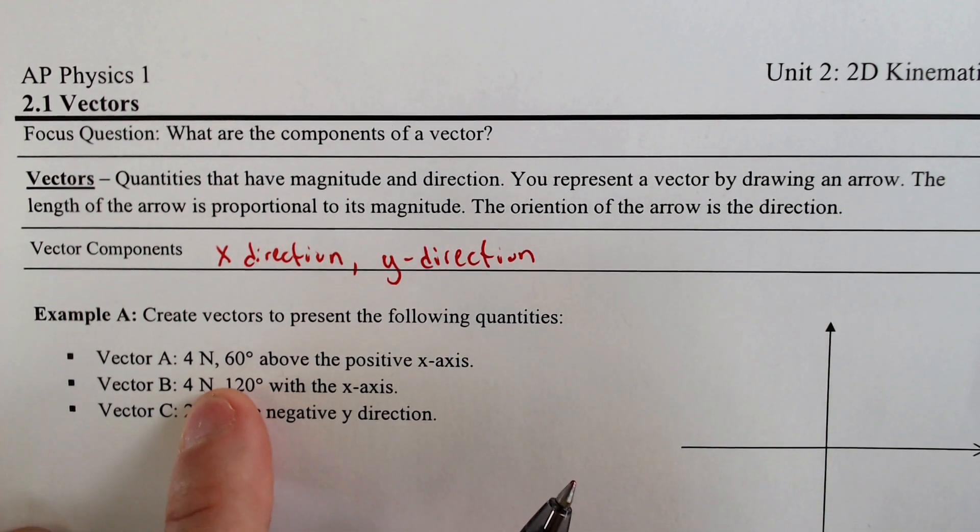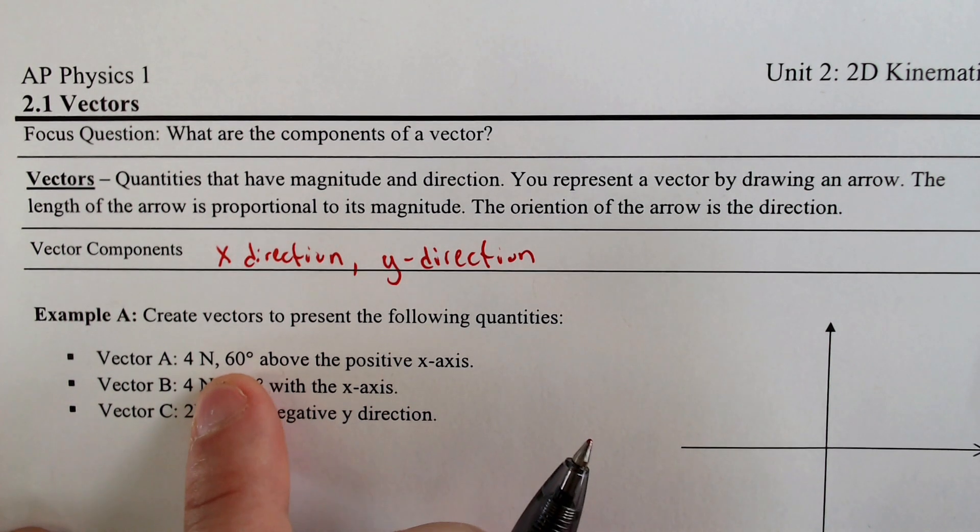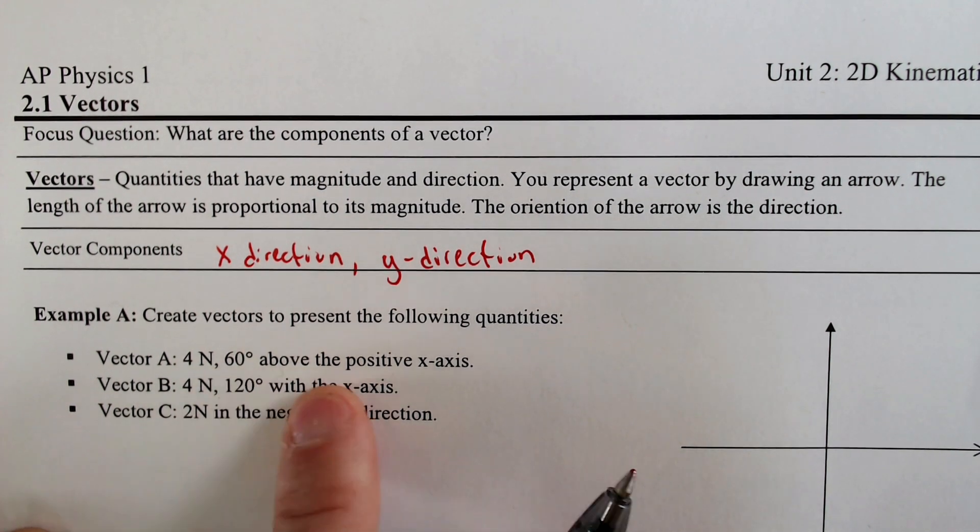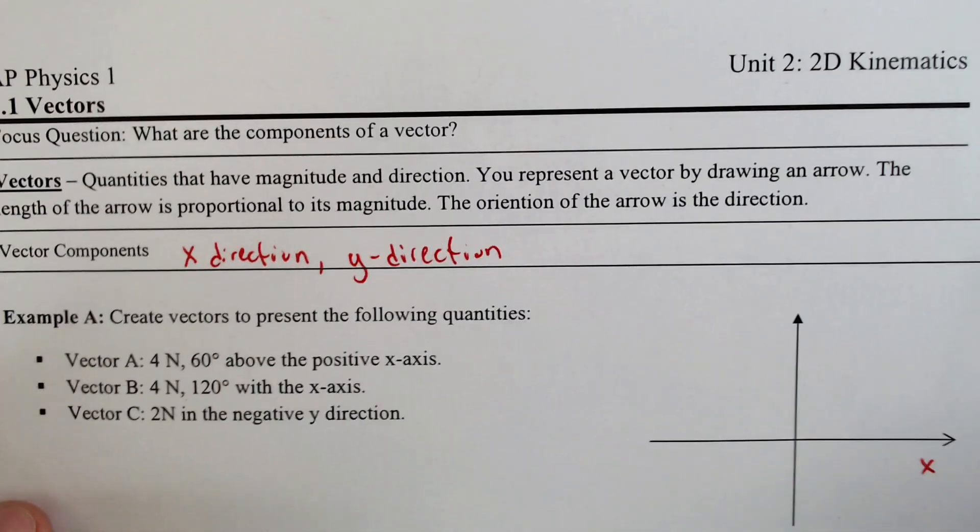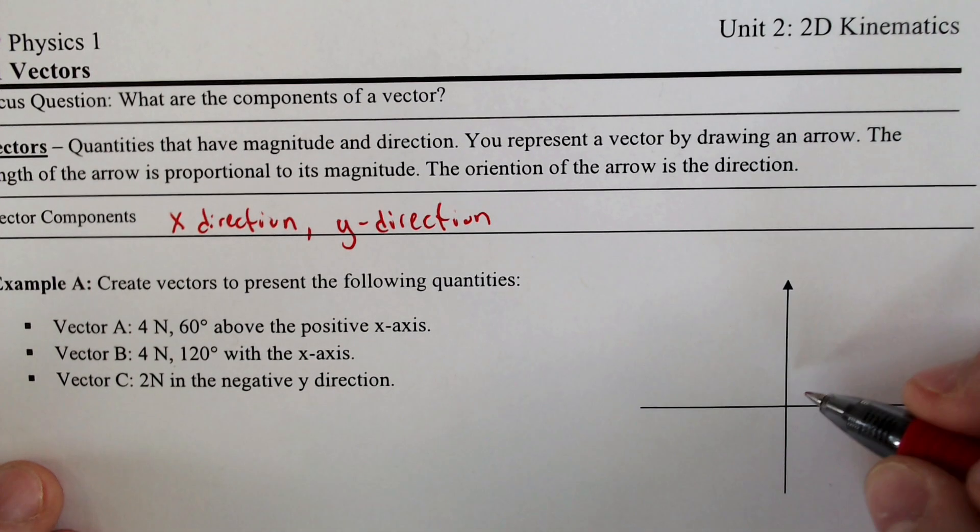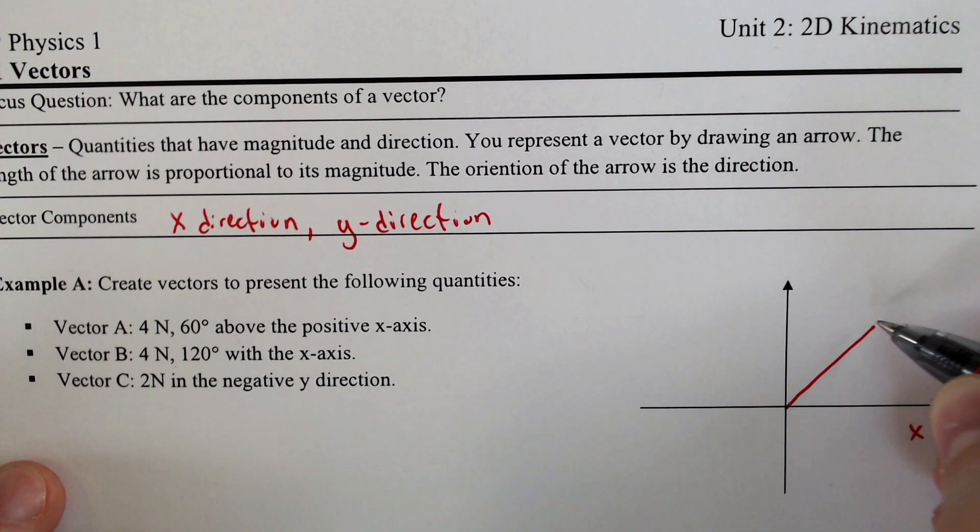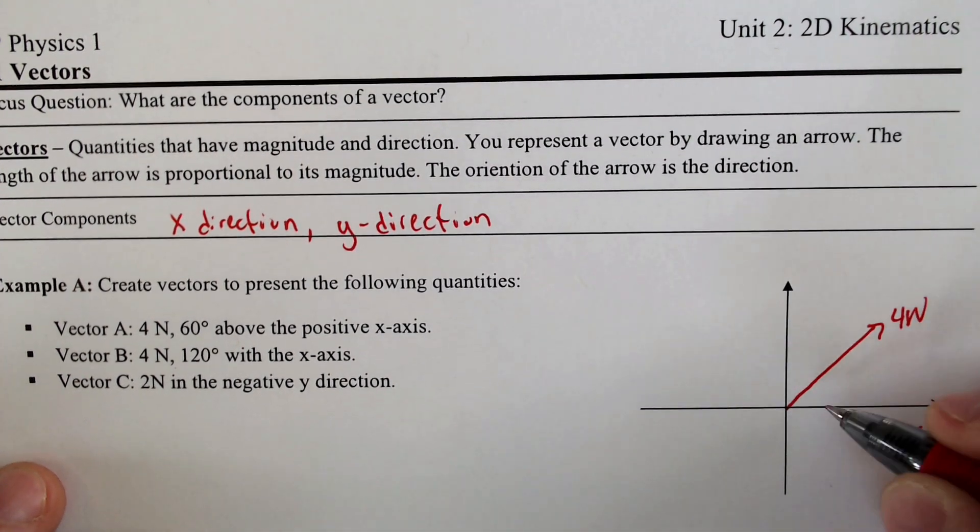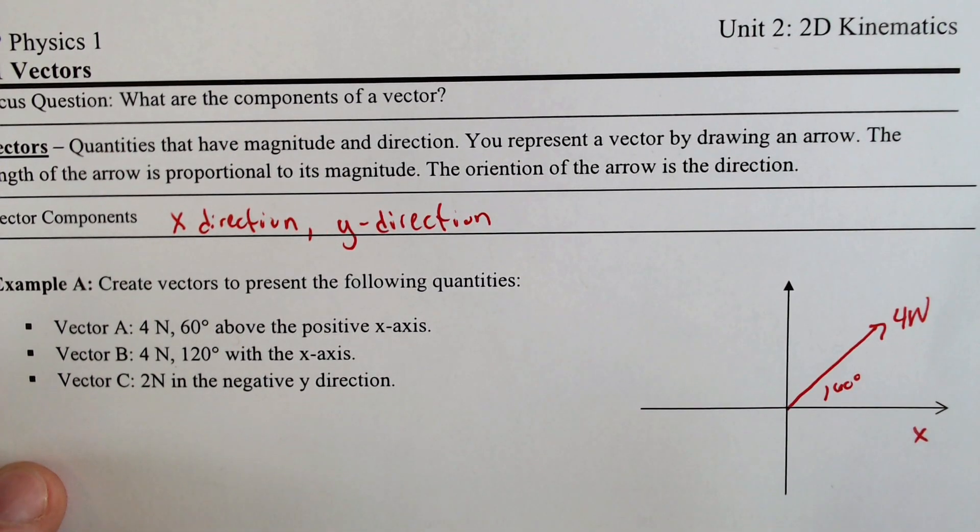Vector A is 4 newtons north. That is going to be the length of the vector and 60 degrees above the x-axis in the positive direction. So here's the x-axis. We need to go in the positive direction by about 60 degrees, and we need to draw a vector that is about 4 newtons long, and we could call that part around 60 degrees. Looks more like 45, but it's close enough.